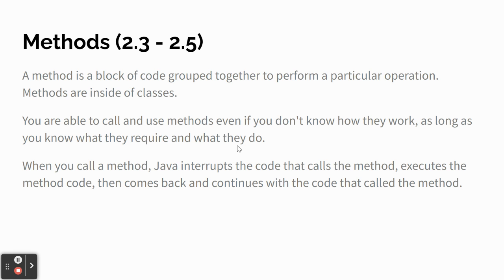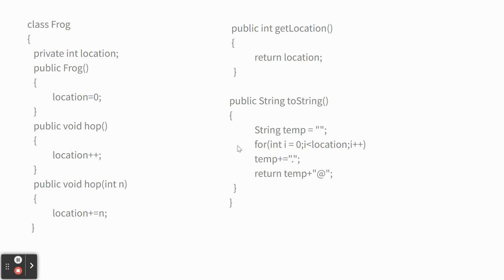It's like you're walking on the sidewalk and you come to a cul-de-sac — instead of crossing the street, you turn right, go around the cul-de-sac, and come back, then keep walking. Java runs the method and then comes back and keeps going.